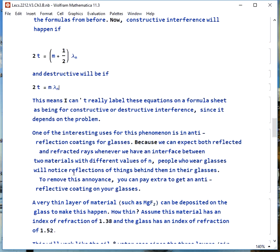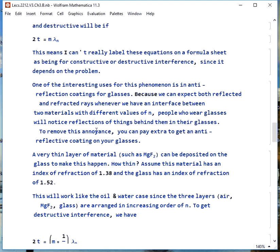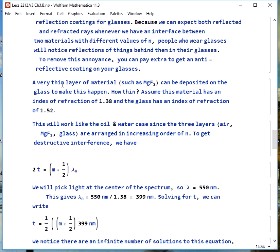There is an interesting use for this especially if you wear glasses. Anti-reflection coatings are fairly popular and the reason is we'll always get a reflected and a refracted ray when we have this interface between two different materials, different n values like glasses and air, and that means people who wear glasses will see reflections of things that are behind them in their glasses and that's pretty annoying. If you get the anti-reflective coating put on your glasses you can reduce this problem.